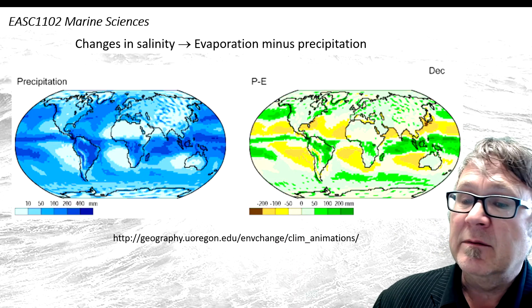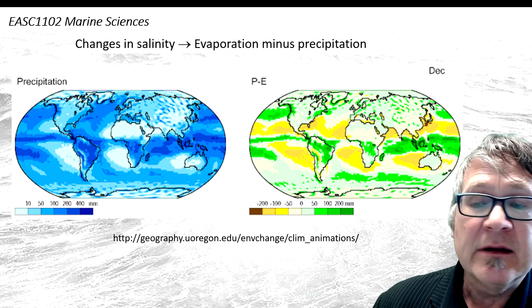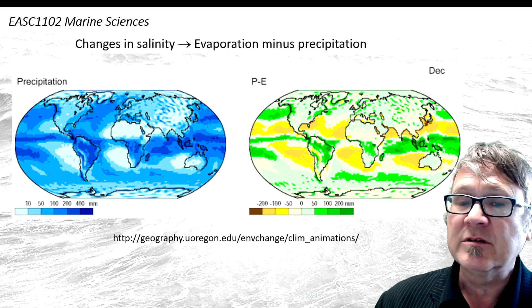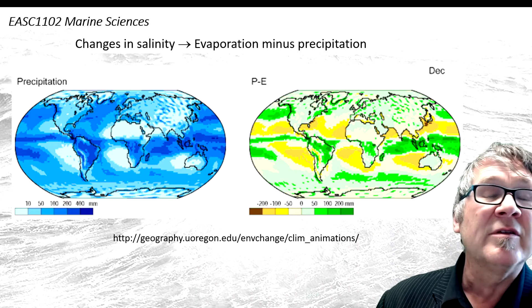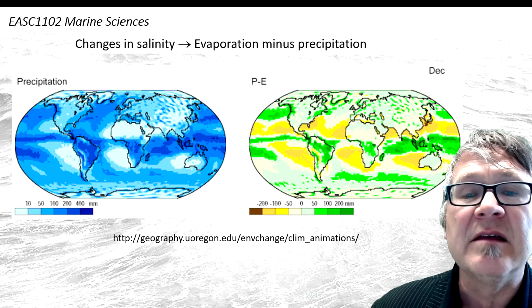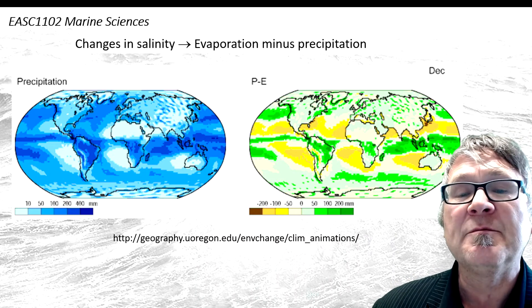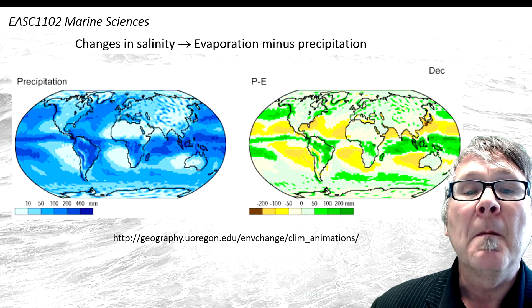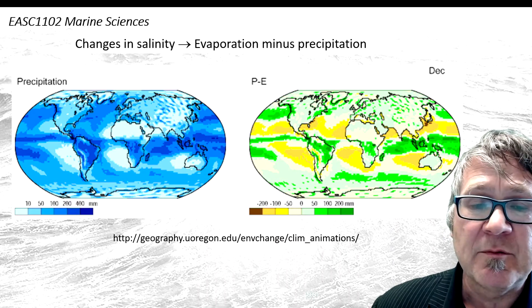On the left side shows your precipitation, the rainfall in millimeters. You can identify the intertropical convergence zones. On the other side it actually shows you the balance — precipitation minus evaporation.